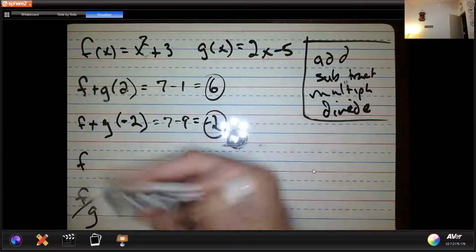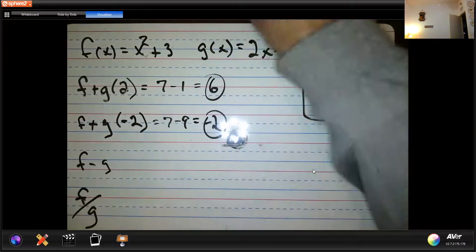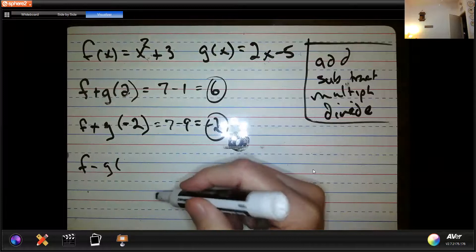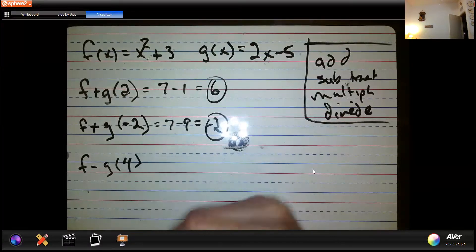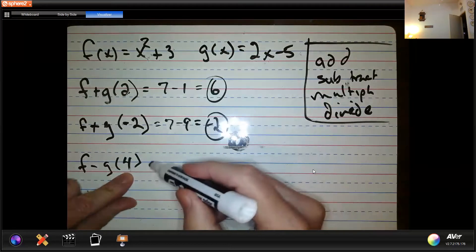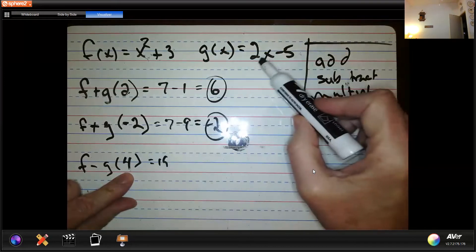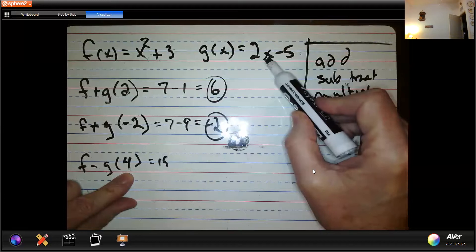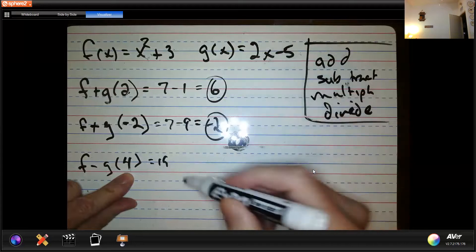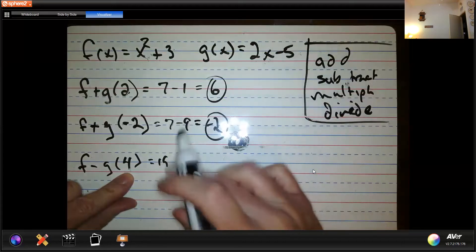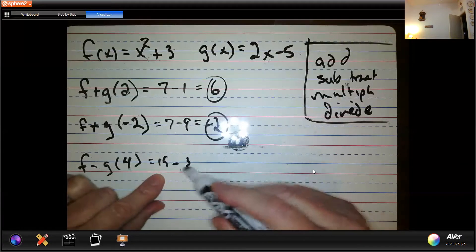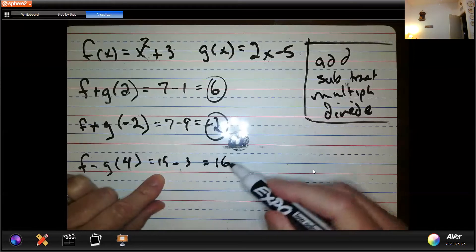So let's do a couple of subtraction ones as well. And then we'll come and do the multiplies. So if I do minus, let's do subtraction. So 4 goes in here, that's 16. 16 plus 3, that'd be 19. And 4 goes in here, that's 8 minus 5, right? 8 minus 5, that's 3. And we're supposed to subtract those numbers, 19 minus 3, I can do that, 16. Yay!